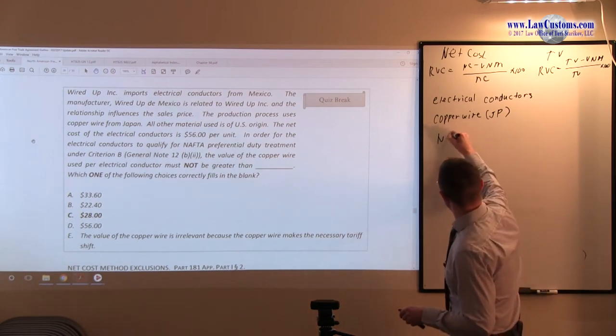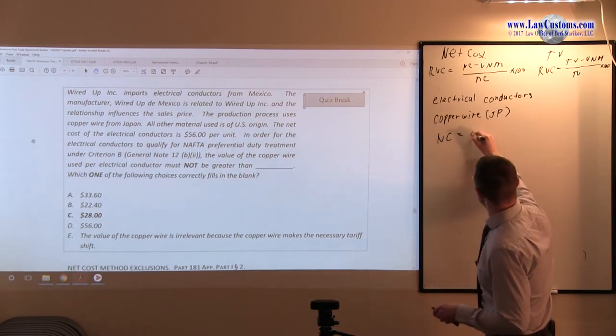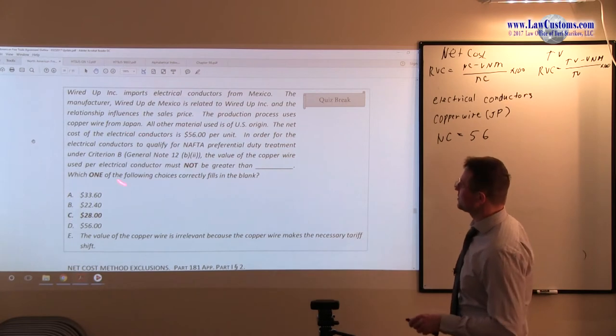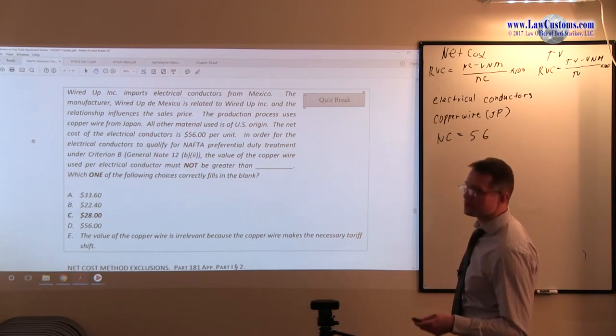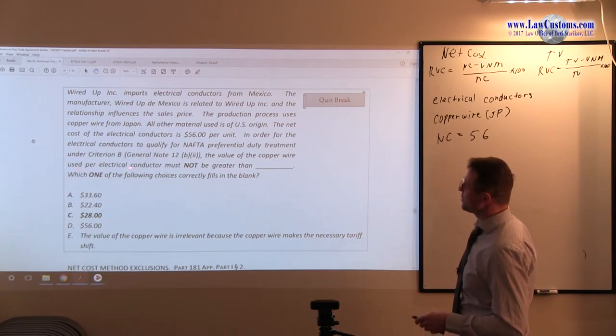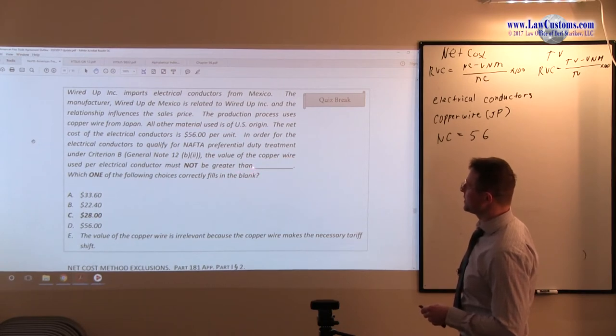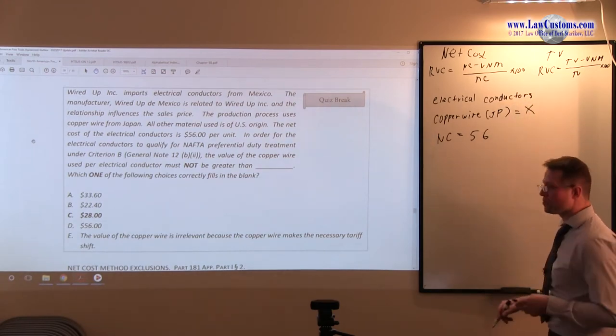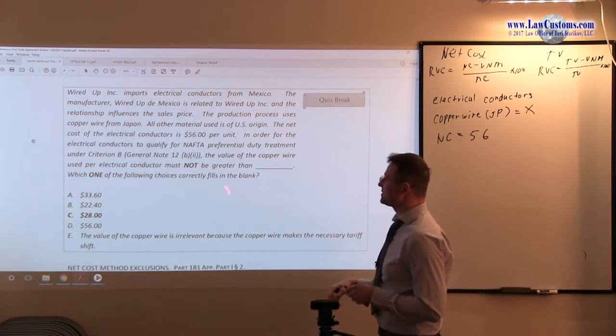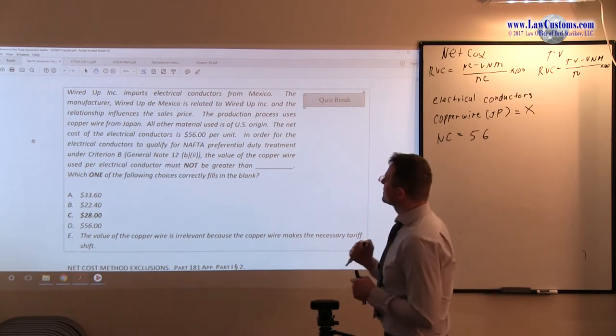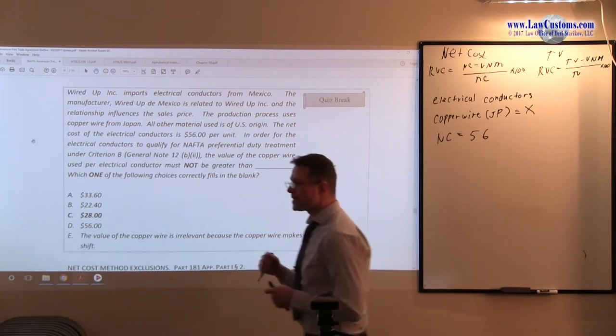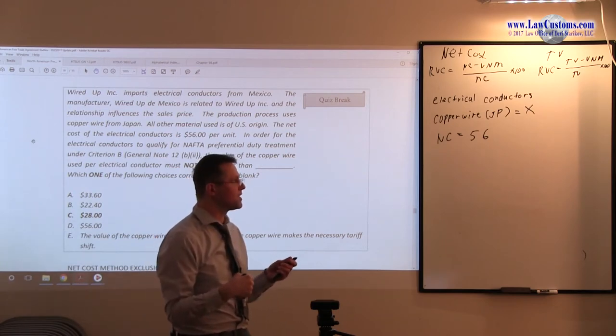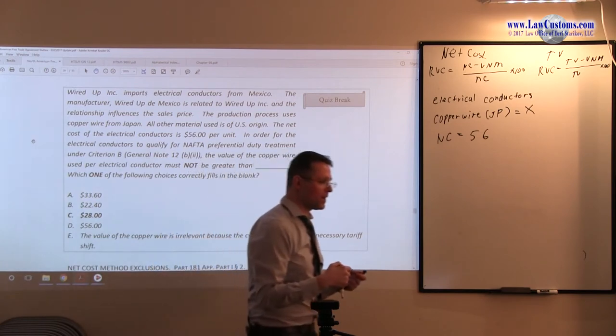The net cost of the materials of the electrical conductors is $56 per unit. In order for electrical conductors to qualify for NAFTA preferential duty treatment under G and B2, that's origination, the value of copper wire used per electrical conductor must not be greater than... So copper wire is Japan, so this is X because it's an unknown. And which of the following correctly fills in the blank? This is interesting because what customs examiners are asking us to do is do kind of like a reverse calculation. Instead of giving you all the numbers to plug into the formula, they're giving you only the partials and some of them on the other side.